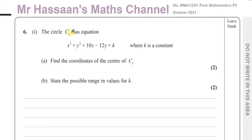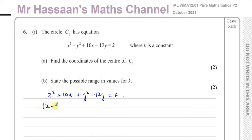Question number six, part one says the circle C1 has equation x squared plus y squared plus 10x minus 12y equals k, where k is a constant. Find the coordinates of the center of C1. So what we need to do here is complete the square. We have x squared plus 10x plus y squared minus 12y equals k. Completing the square, you end up with x plus 5 all squared, then take away 25. We take half of the coefficient of x, which gives us x squared plus 10x plus 25, and we don't want the 25 so we take it away.